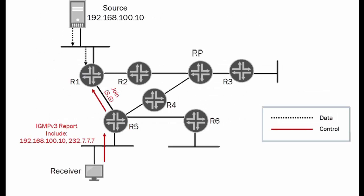Let's first talk about source-specific multicast and take a look at this model and how it works. We have a receiver — a PC at the bottom of the diagram — that is an IGMP version 3 capable PC. The user wants to participate in a multicast and has already received the information about the multicast either through an email or a website. So they have both the multicast group and the multicast source. What we see being initiated from the receiver is an IGMP version 3 report specifically for the group 232.7.7.7 and the source address 192.168.100.10.